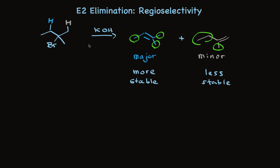Alternatively, the tan highlighted hydrogen can be abstracted, and that forms the product on the right. This product has only two alkyl groups attached to it.